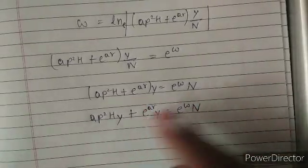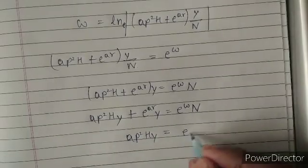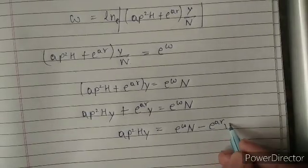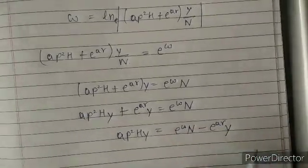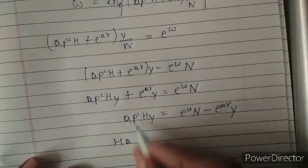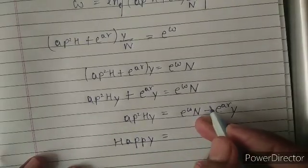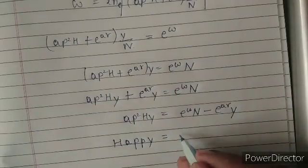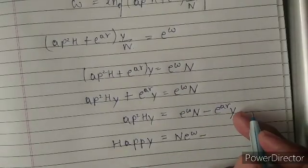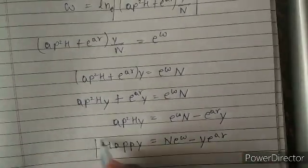We transfer this term to the right hand side, so we have A·P²·H·π equal to e raised to the power W minus e raised to the power A·R times π. Now rearranging the terms, we write H·A·P² — writing it two times P — times π, equal to N·e raised to the power W, and π on this side gives e raised to the power A·R. So we finally have: HAPPY NEW YEAR!